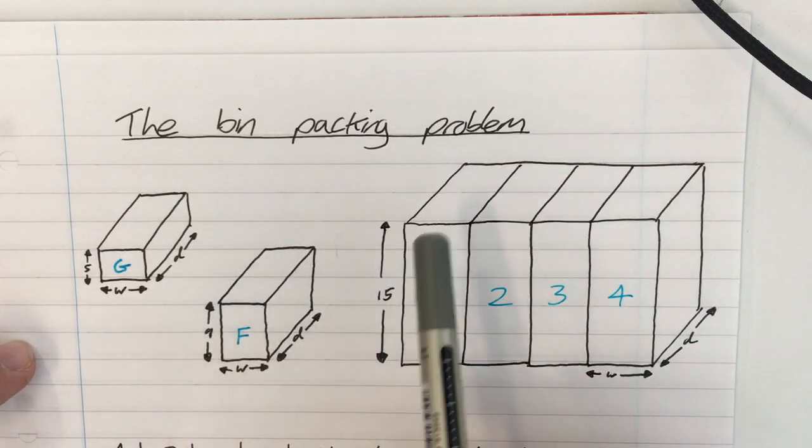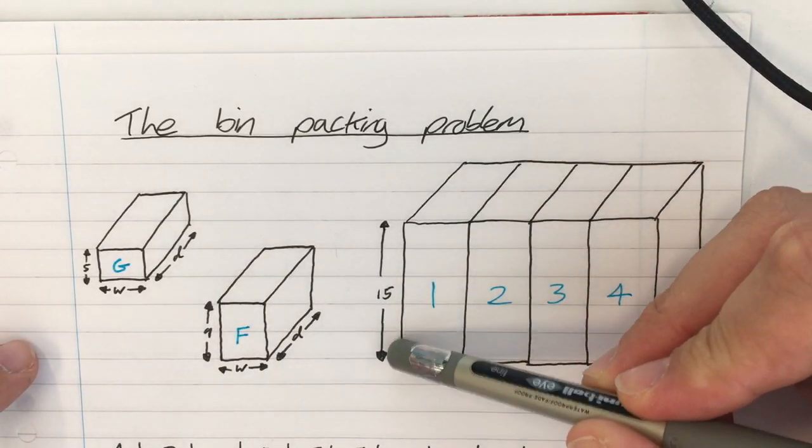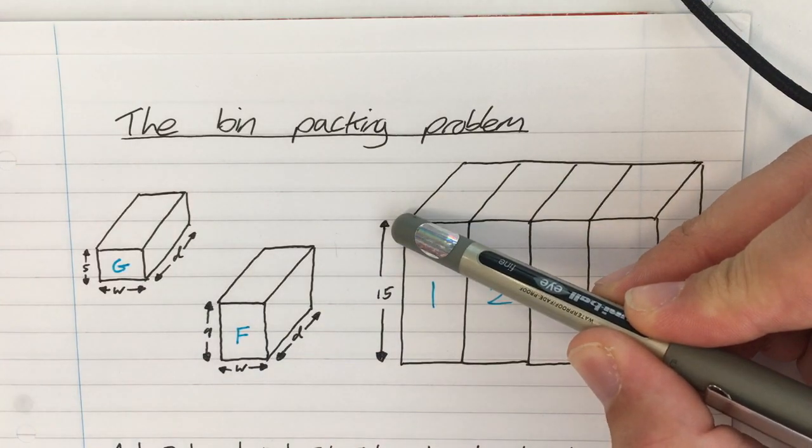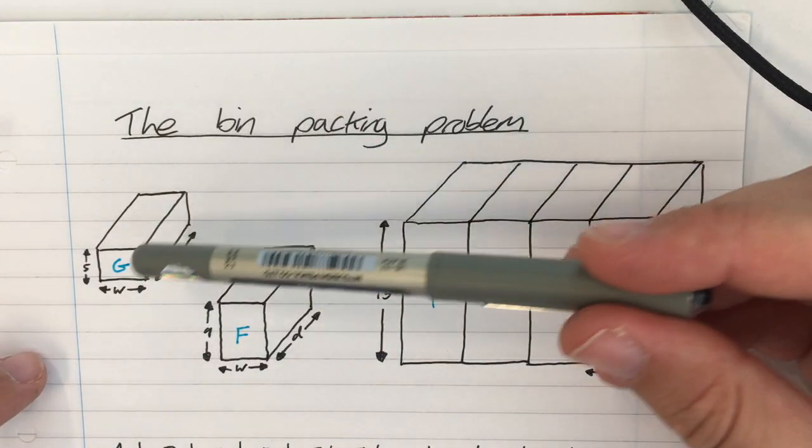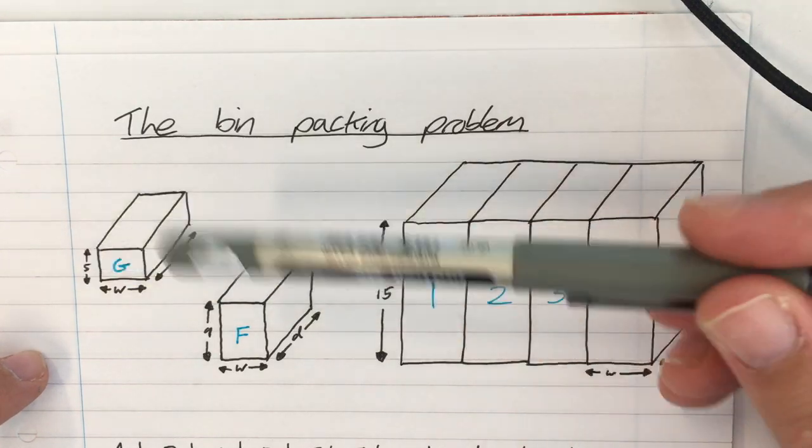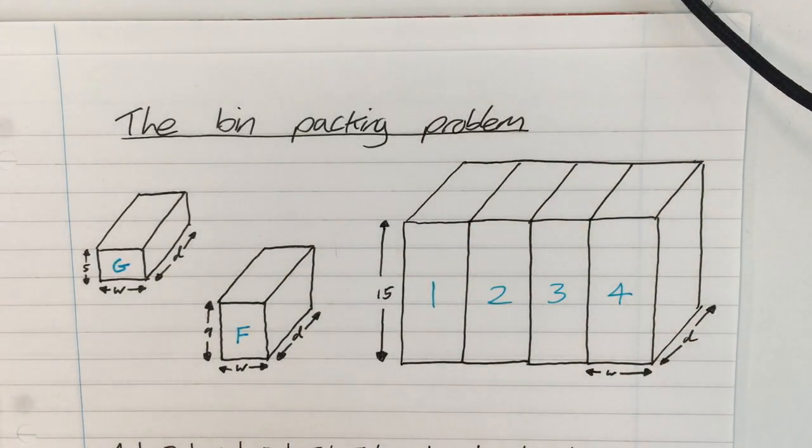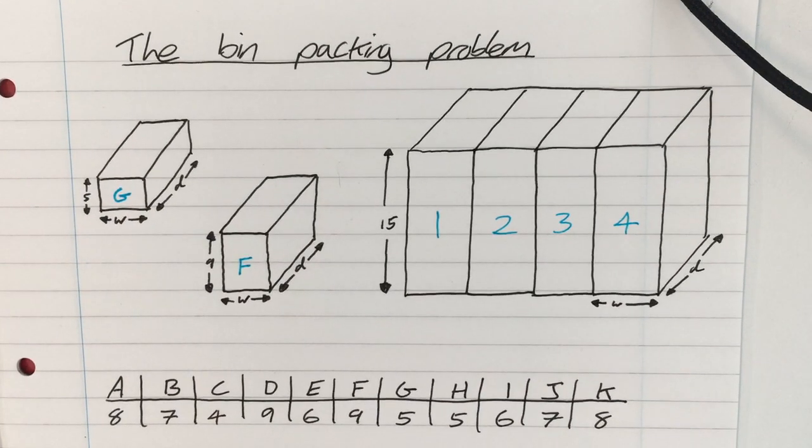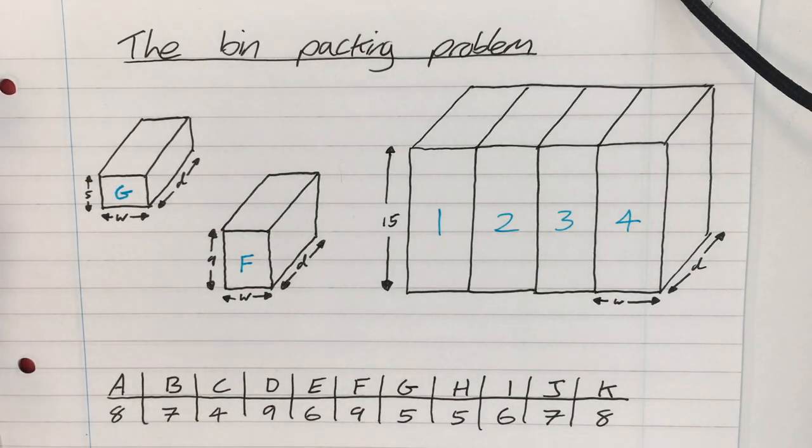And a number of boxes which need to fit into these racks. All the racks are 15 units high, we're not given any units. And we can see, for example, box G is 5 units high and box F is 9 units high. And altogether we have 11 boxes, so there they are, A, B, C, D, E, F, G, H, I, J and K, along with their corresponding heights.